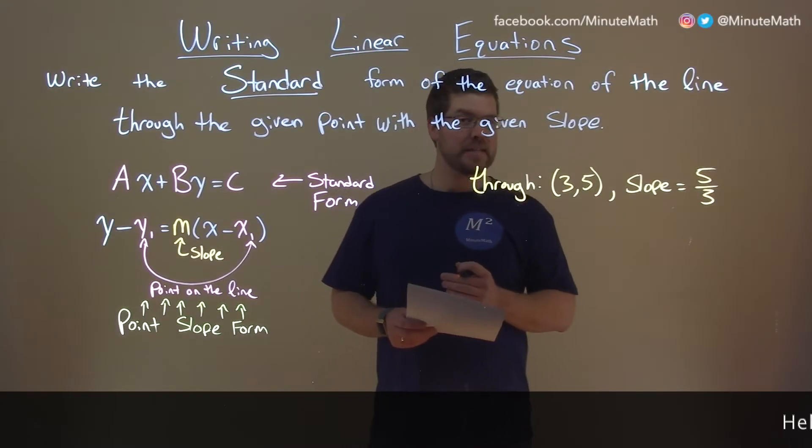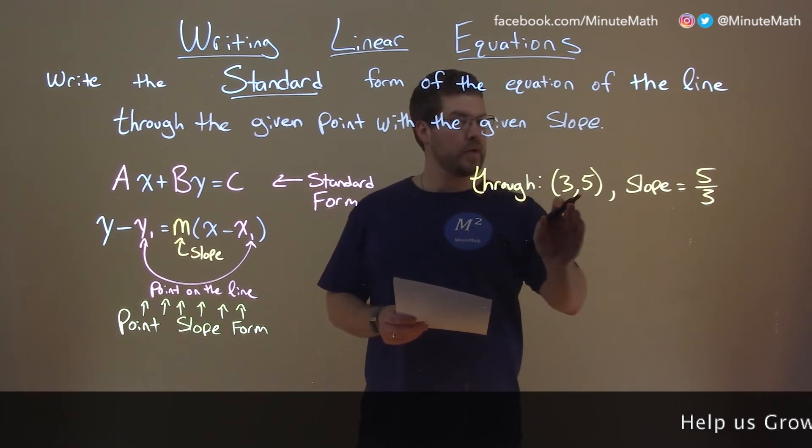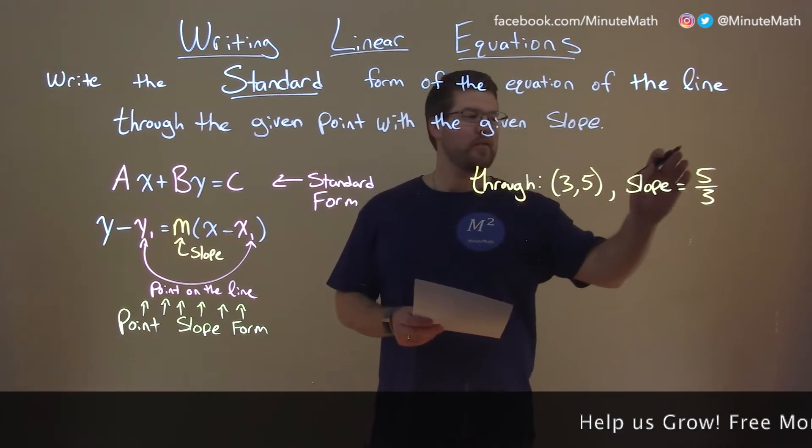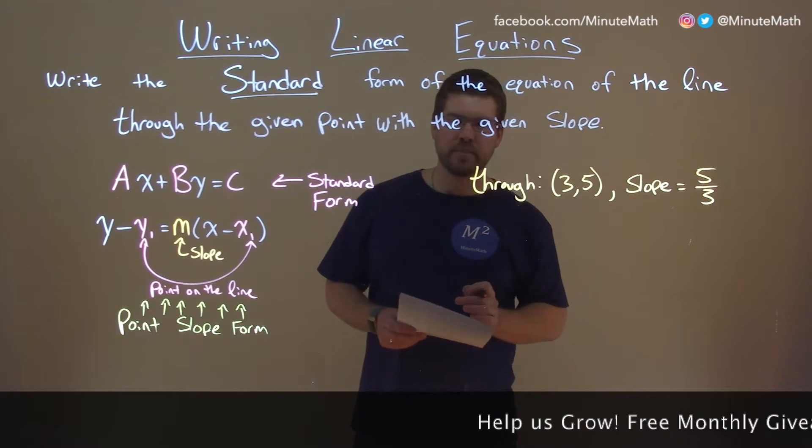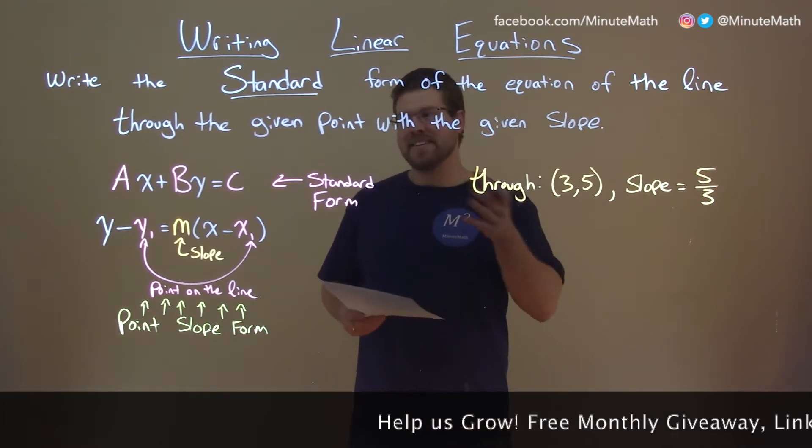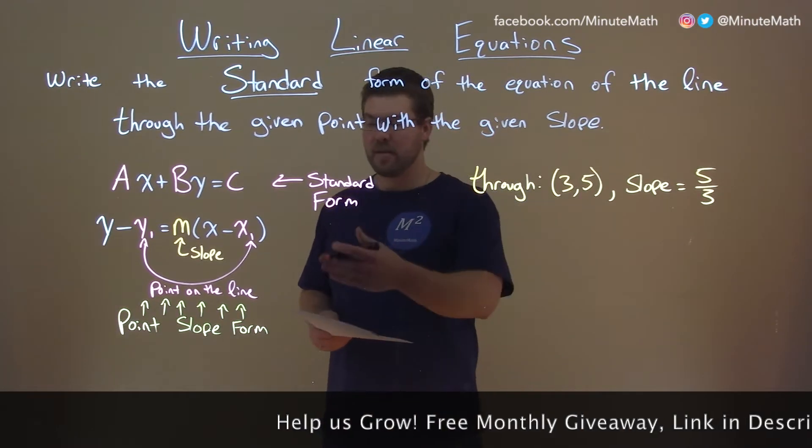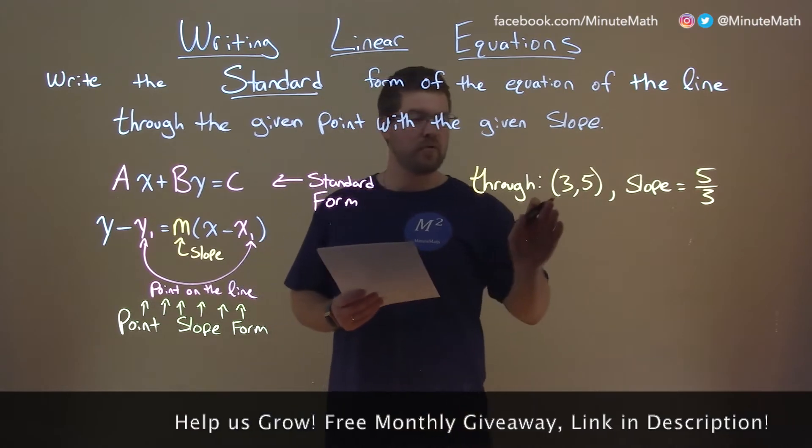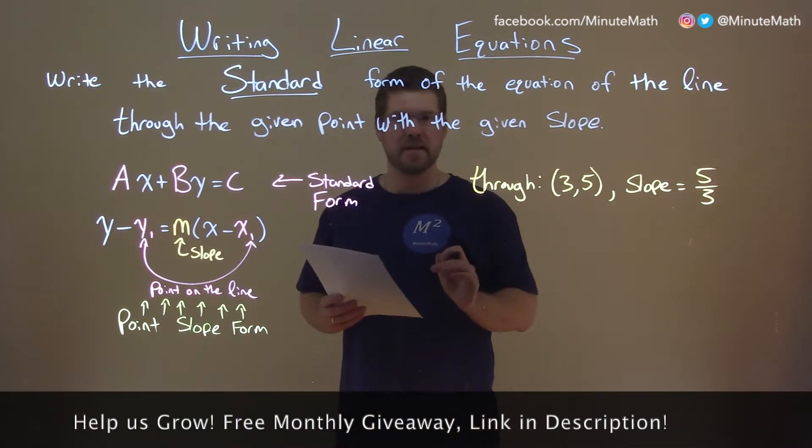If I was given this problem through (3,5) and our slope is 5 thirds here, when we write this in standard form, first step is point-slope form. So let's write this in point-slope form and let's adapt it.